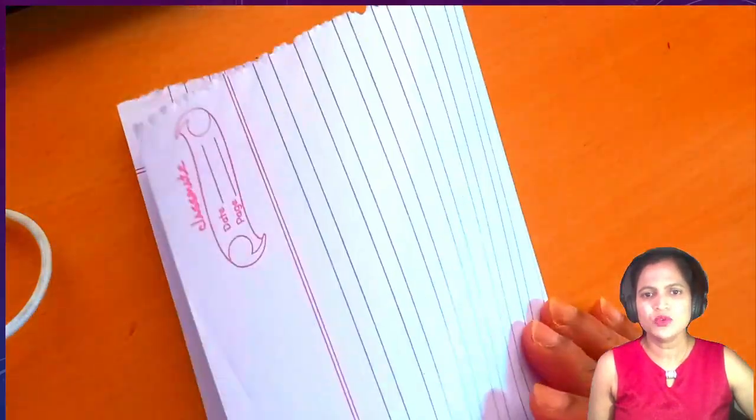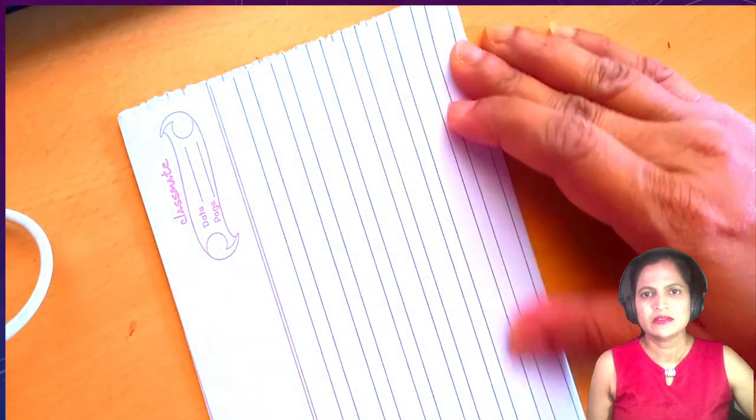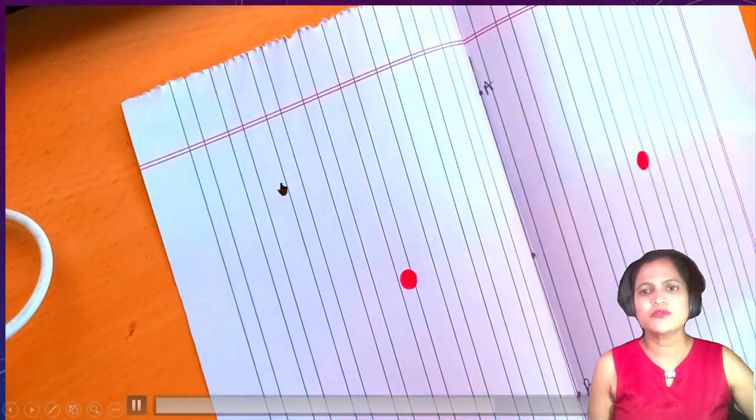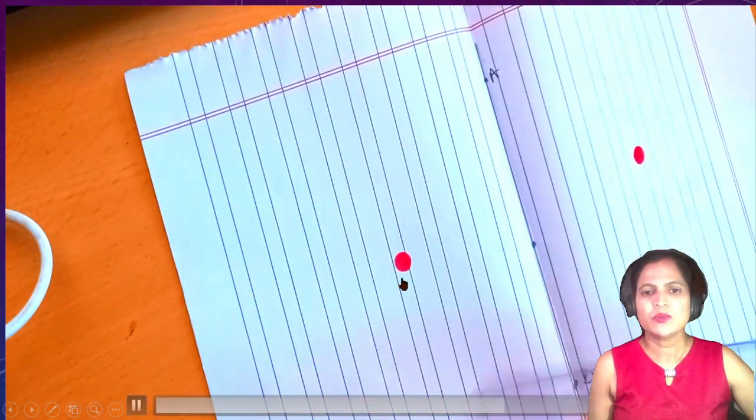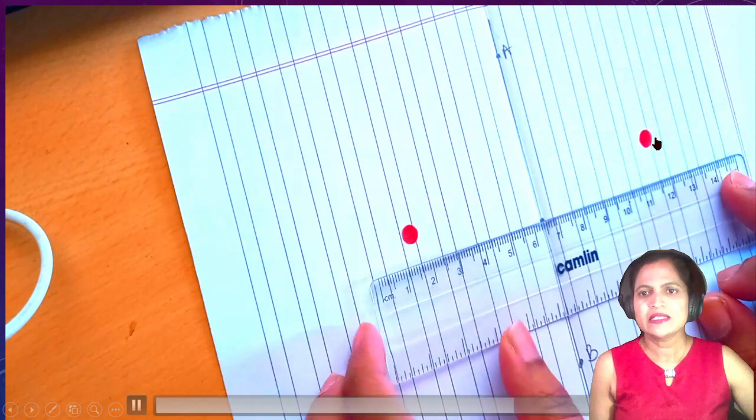Put some ink dot here and fold this paper. Raise it again. Now you will get the exact mirror image of that point. The original point, this is X, and this is X'.